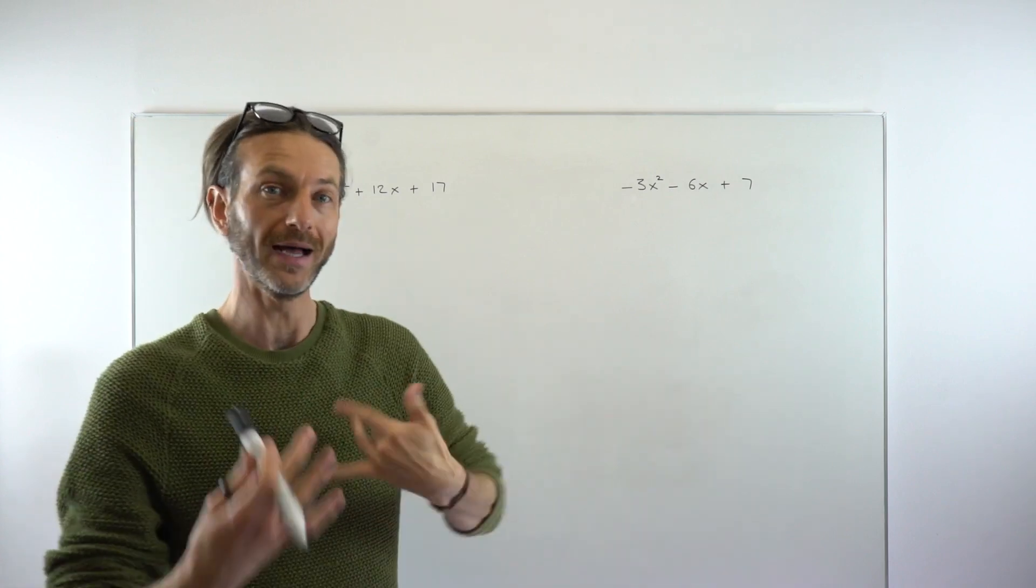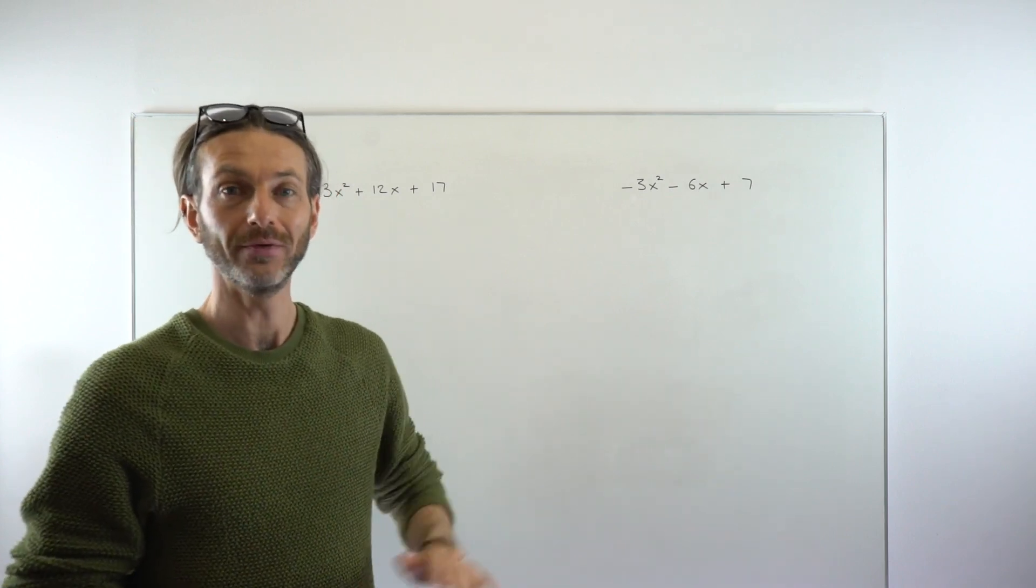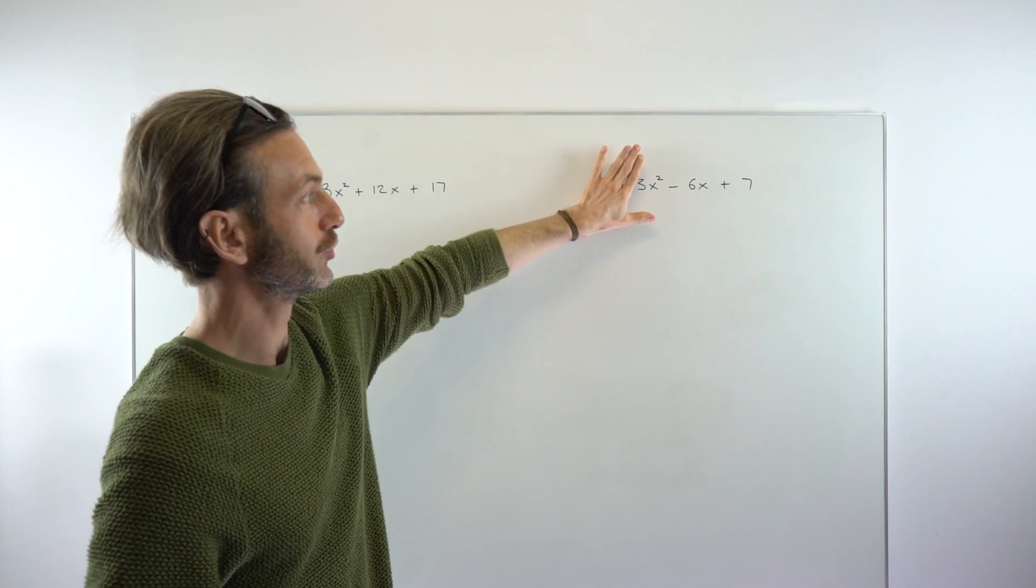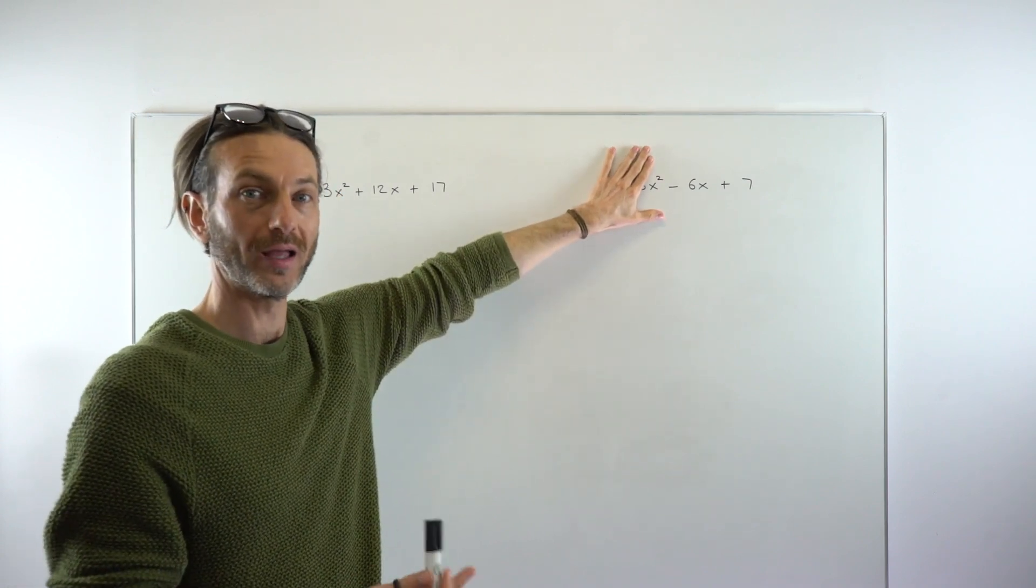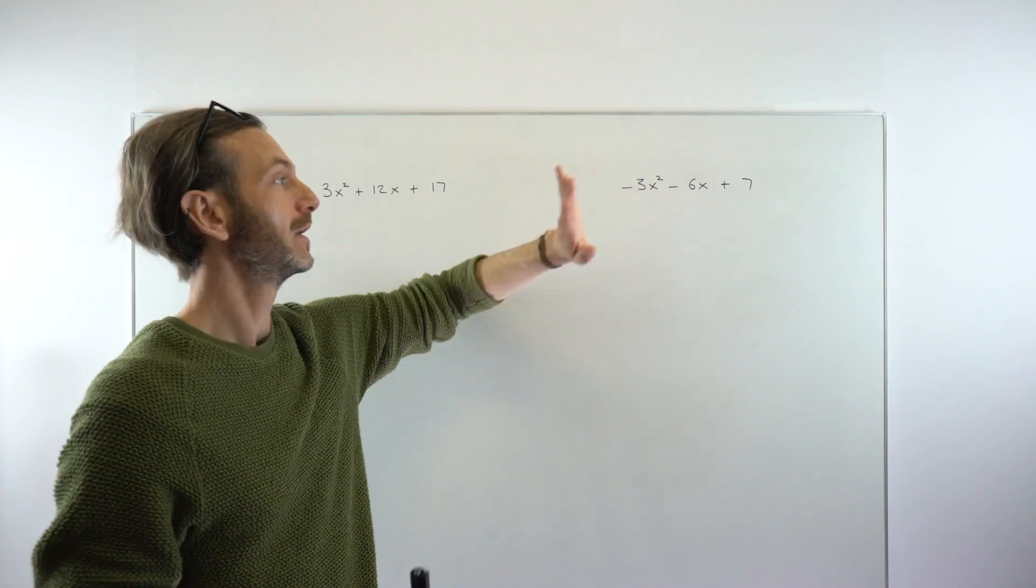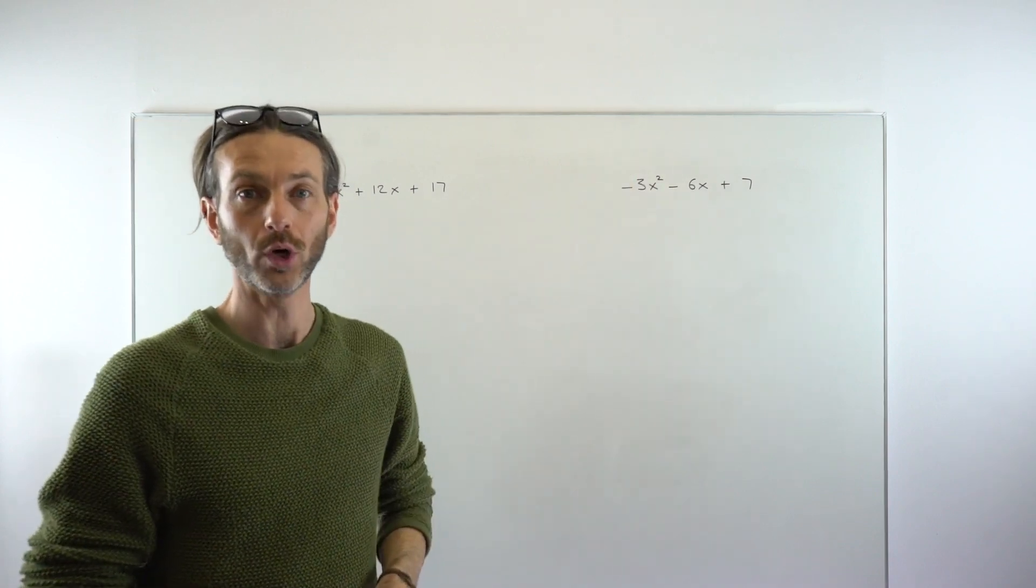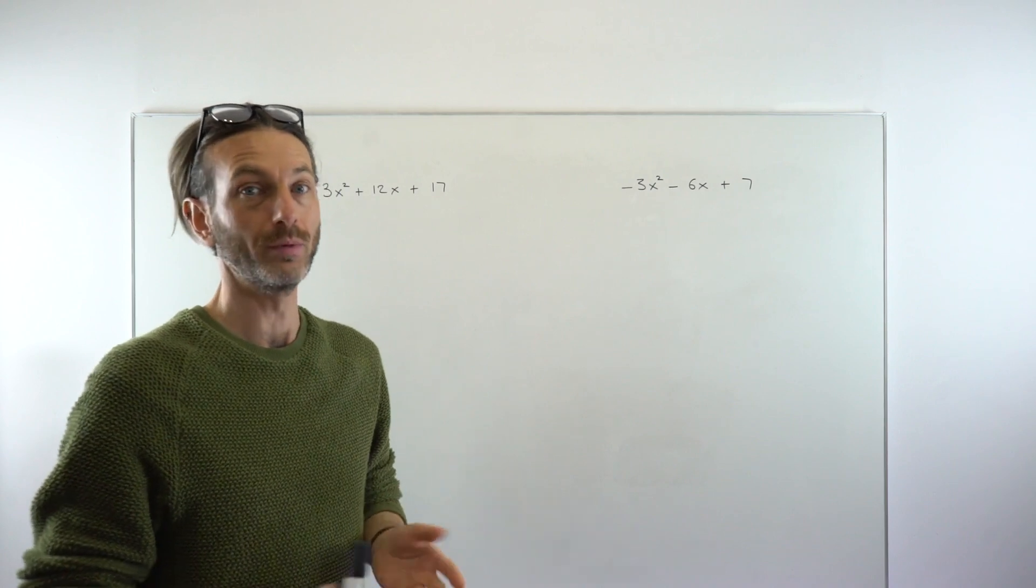In that simpler case where there's no number or a one in front of the x-squared, it's really only a one or two step process. This technique, though, needs several steps of working—probably three, four, maybe even five steps.